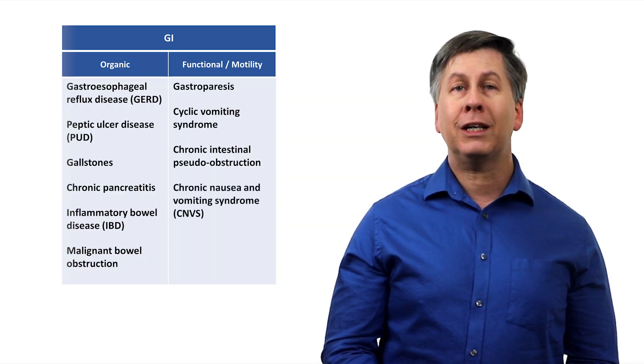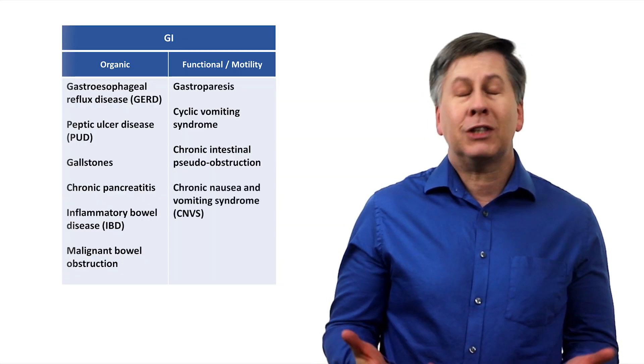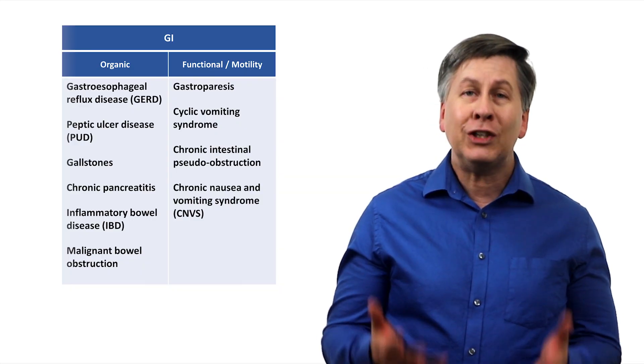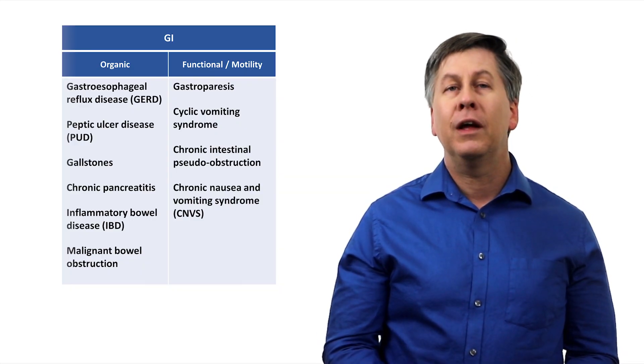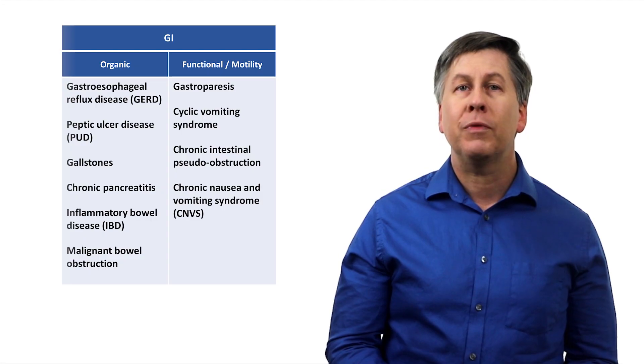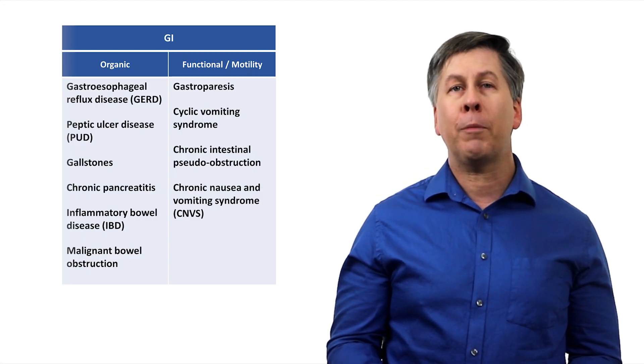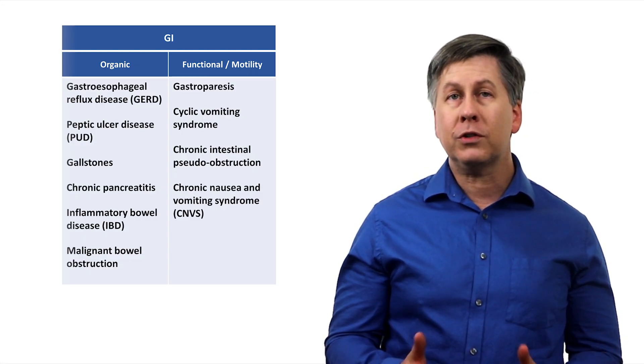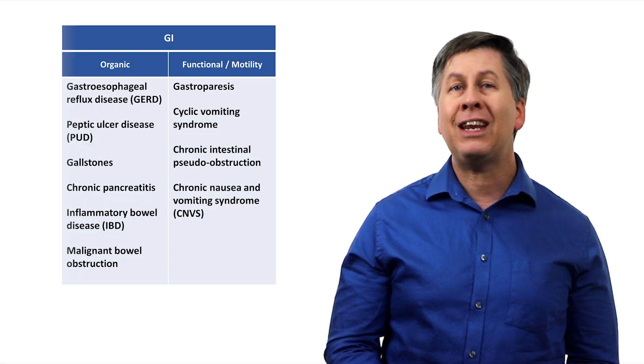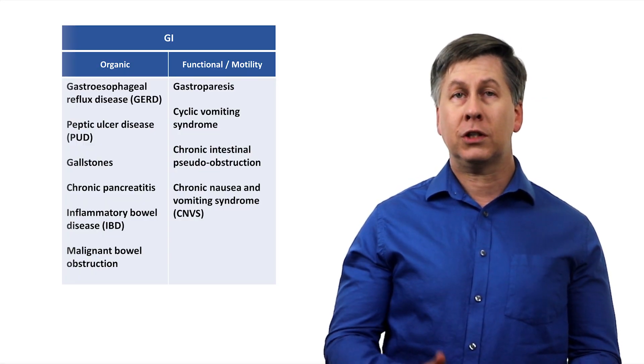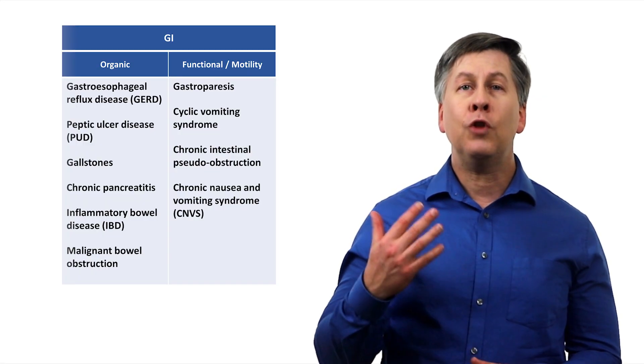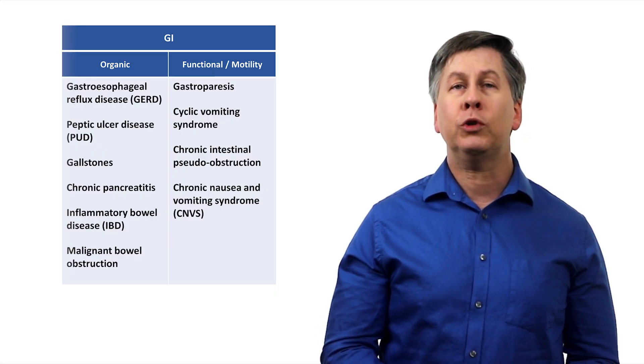Chronic nausea and vomiting syndrome sounds like a nonspecific catch-all term, but it's actually considered to be a specific functional diagnosis. The diagnostic criteria for it is at least one episode of nausea or vomiting per week for at least three months, with an initial onset of any nausea or vomiting for at least six months previous, and with no alternative explanation after routine evaluation.